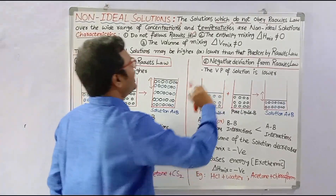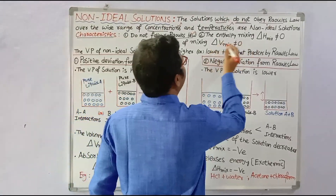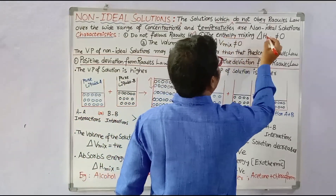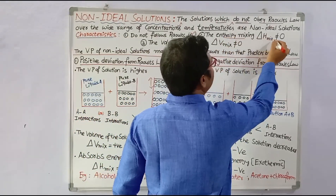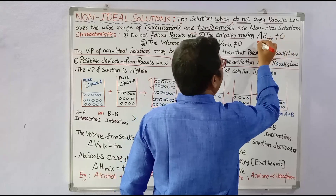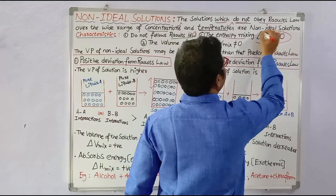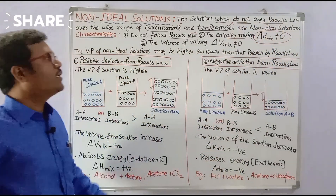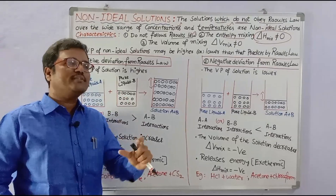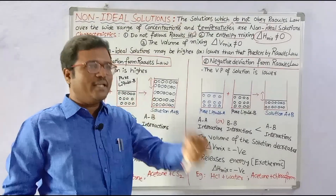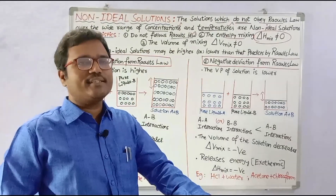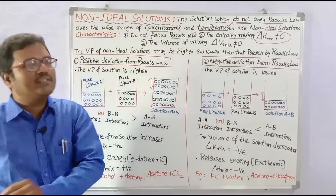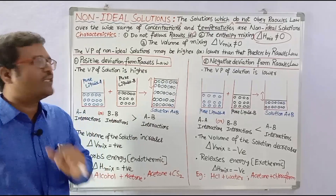The second characteristic is that the enthalpy of mixing, delta H mix, is not equal to zero. That means during the mixing of two components, heat will be released in some cases or heat may be absorbed in some cases.